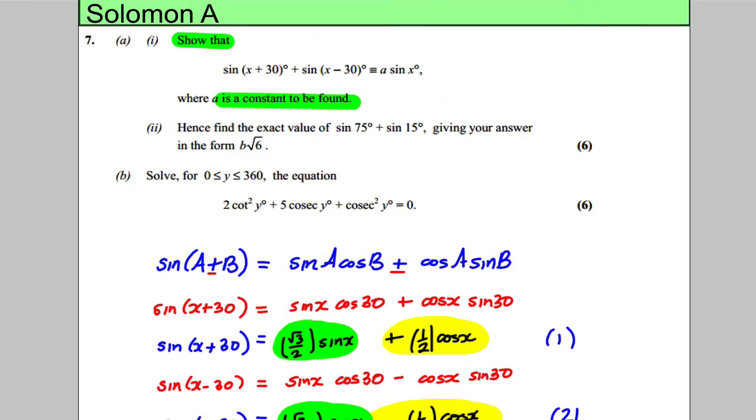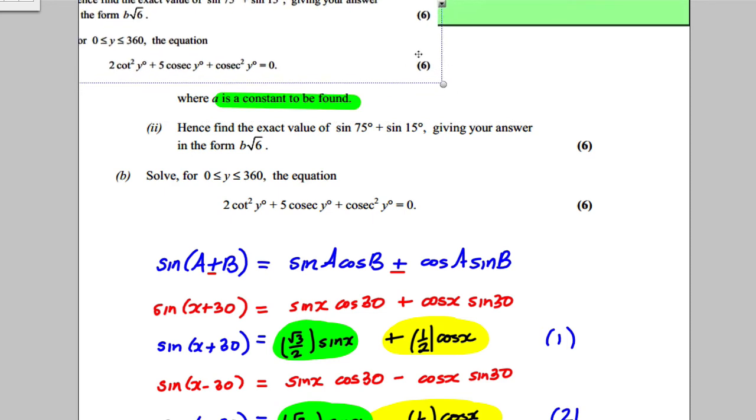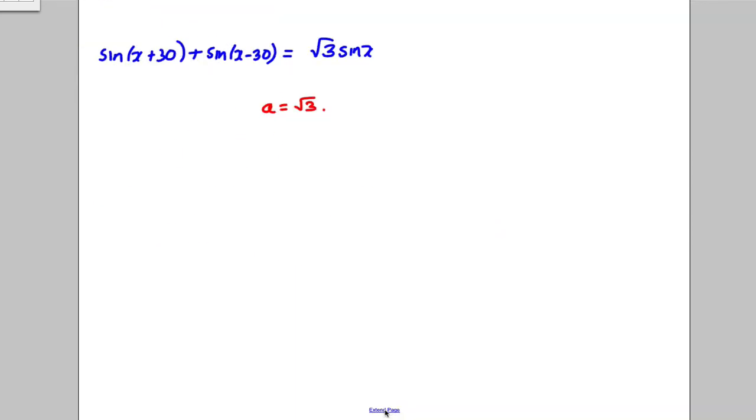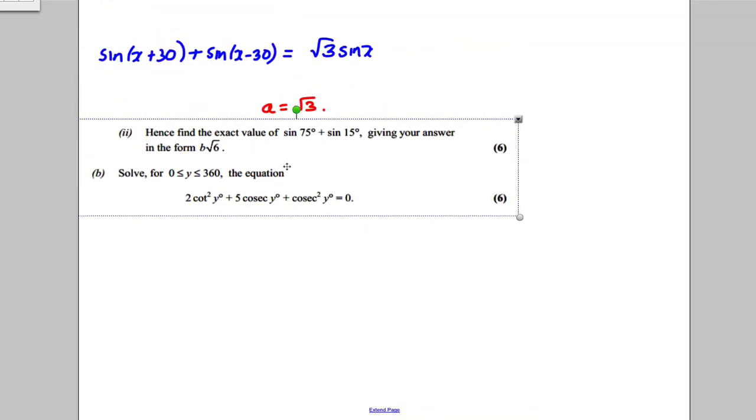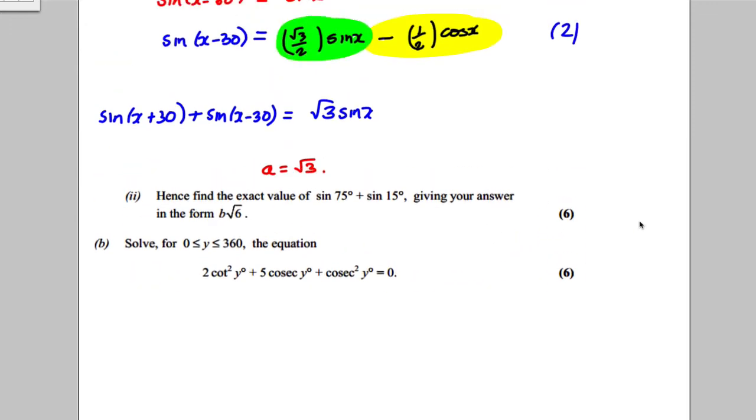Then it says hence find the exact value of the following, giving you the answer in the form of b root 6. Hence means using what we've just done. Obviously, we're going to keep this 30s here. Can you think of a number for x that would get me the 75 and the 15? If x was equal to 45, it would work.